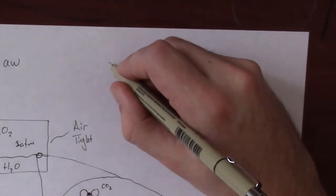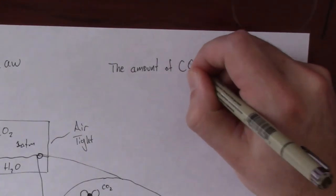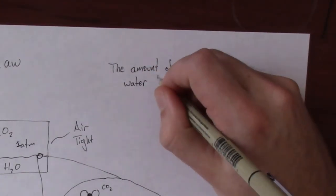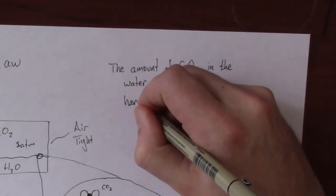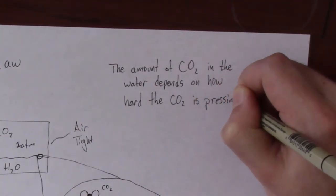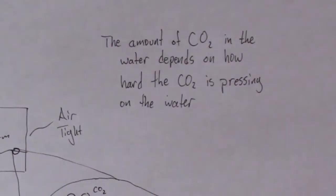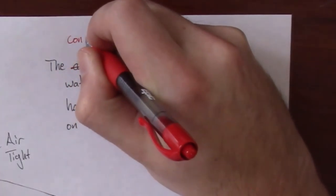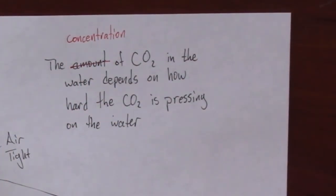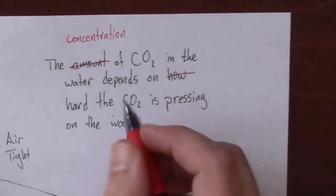So here I've written: the amount of CO2 in the water depends on how hard the CO2 is pressing on the water. That's basically Henry's law. But to be more accurate, what we can say is the concentration of CO2 in the water depends on the partial pressure of CO2 above the water.